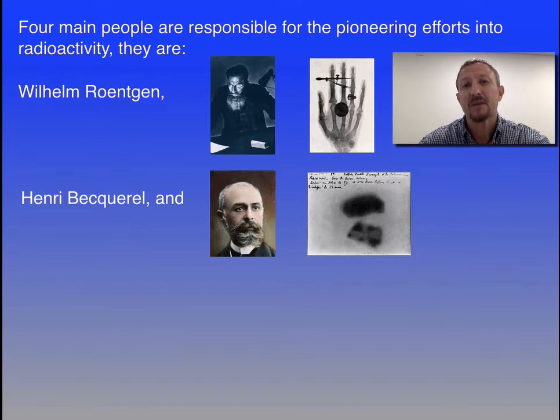One day he was setting up his experiment and it was raining, and as a result he left the photographic plate and black paper, put it in the drawer, put the rock on top and shut the drawer. When he developed the plate later, he actually got these silhouettes as you can see in the image here. Obviously the sun had no bearing on this energy. There was something inside the rock which actually was giving off this radiation.